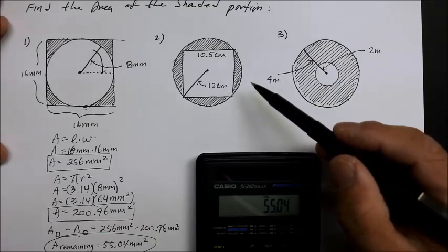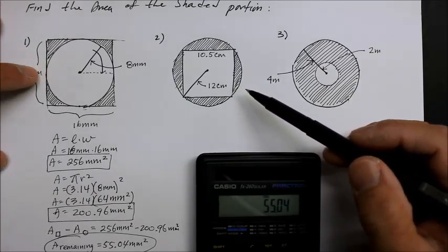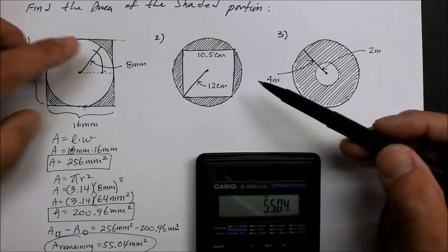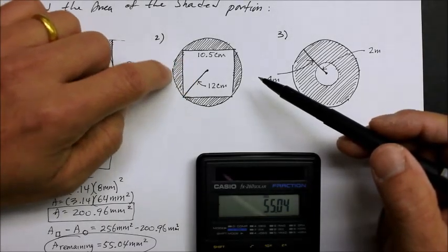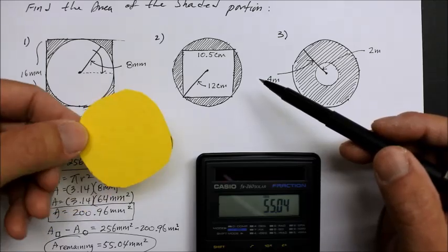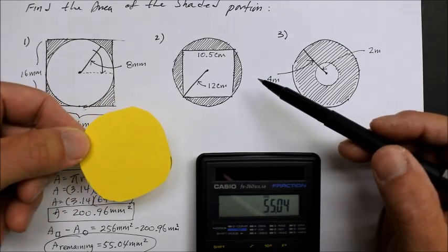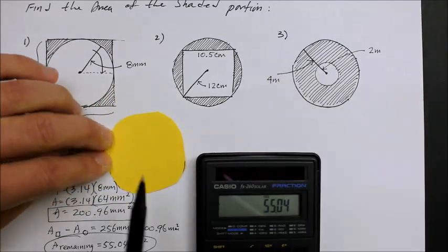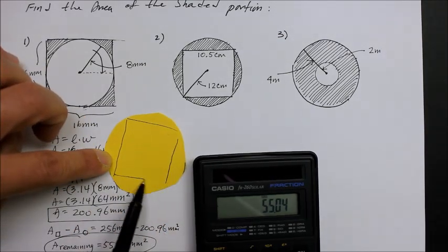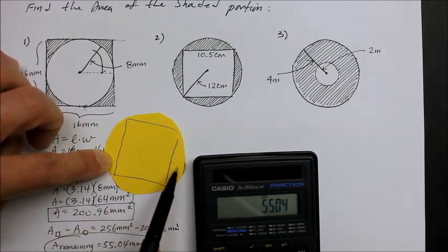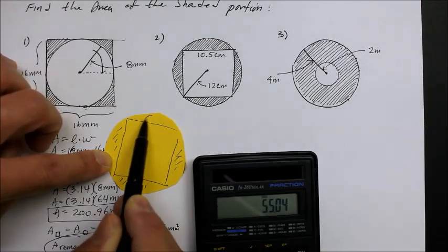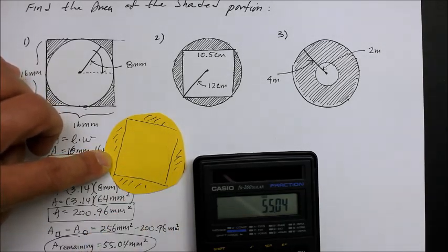Number two is basically the same thing as number one, except rather than cutting a circle from a square, now we're cutting a square from a circular piece of paper. We make the largest perfect square we can and cut it out. The question is: what's the area of the curved pieces being thrown away?